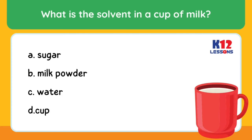What is the solvent in a cup of milk? A. Sugar. B. Milk powder. C. Water. D. Sugar and milk.